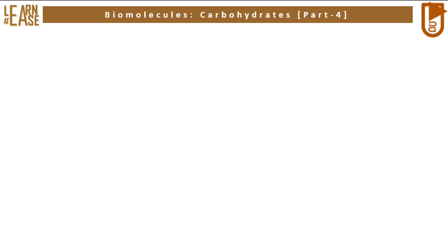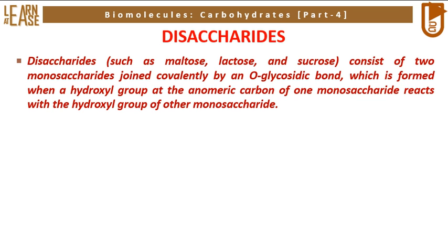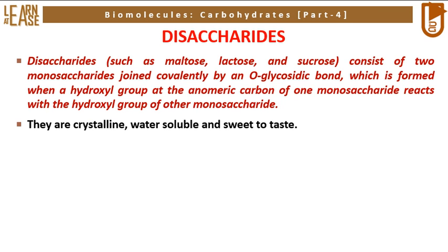Let me begin the video by describing disaccharides. Disaccharides, such as maltose, lactose, and sucrose, consist of two monosaccharides joined covalently by an O-glycosidic bond, which is formed when a hydroxyl group at the anomeric carbon of one monosaccharide reacts with the hydroxyl group of the other monosaccharide. They are crystalline, water-soluble, and sweet to taste.